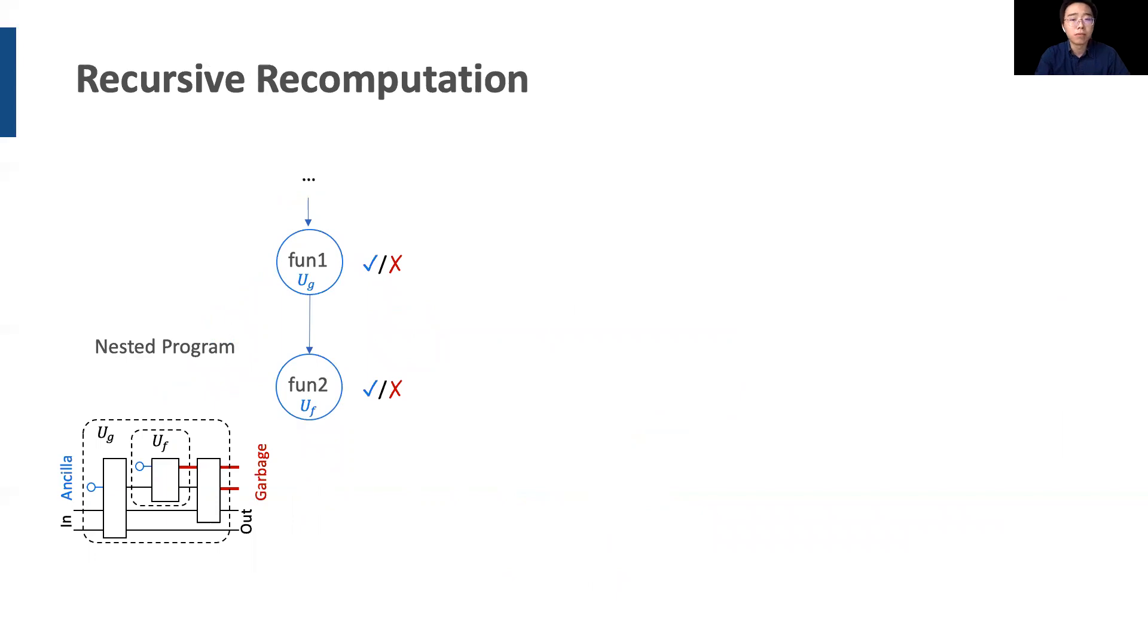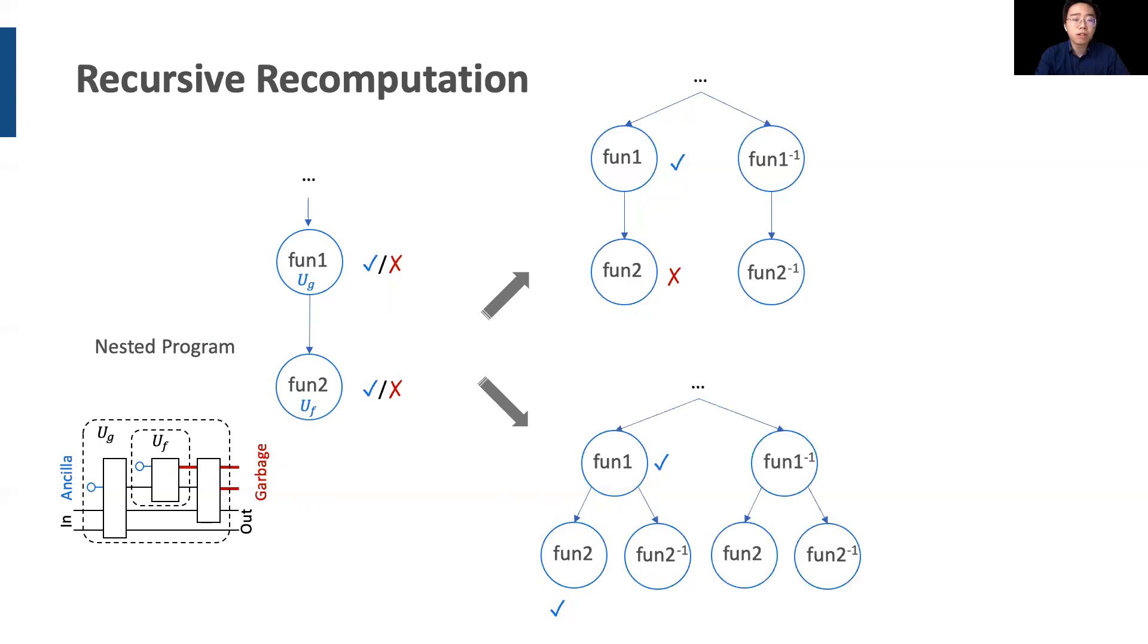Given a nested program where function 1 is the parent of function 2, we consider two different decisions on whether or not to reclaim qubits in each function. Decision 1, suppose we uncompute function 1 but not function 2. As a result, function 1 inverse and function 2 inverse are applied as follows. Second, suppose both function 1 and function 2 are uncomputed. First we have function 2 inverse. Then we take the inverse of function 1 as a whole. Notice that here function 2 are recomputed. Therefore, the cost of uncomputing a parent function can lead to uncomputation of the children functions.